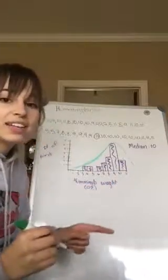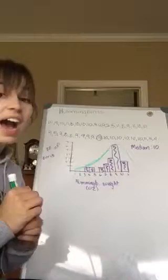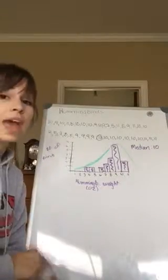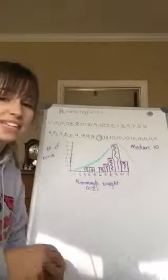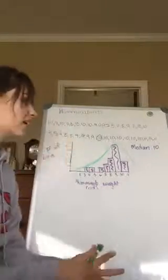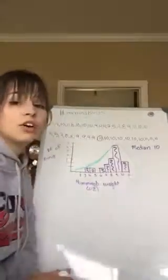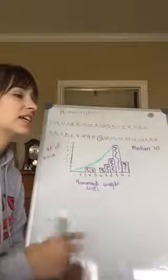So that indicates that this data set is skewed. And because the data set is skewed and because means are easily manipulated by data that is skewed, we would want to use the median of 10 for this data set